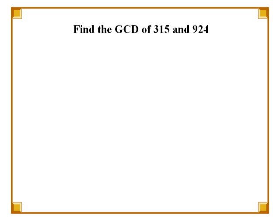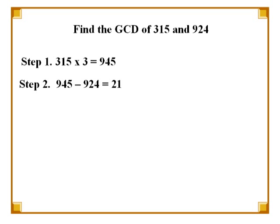Let's try to find the greatest common divisor of 315 and 924. In the first step, we multiply 315 by a number such that the product is as close as possible to 924. We notice that 924 is approximately 3 times 315, so we multiply 315 by 3 to get 945. The next step is to subtract 924 from the product 945, which gives us 21.